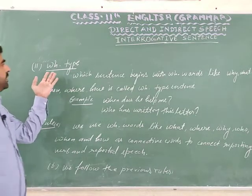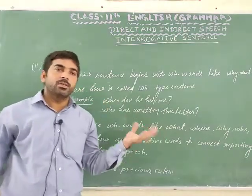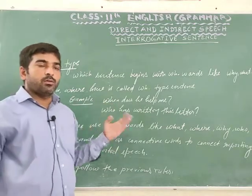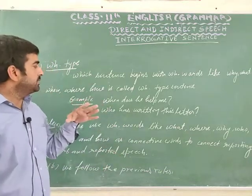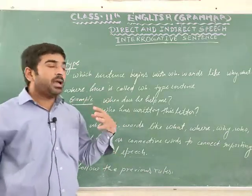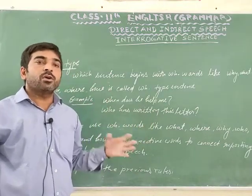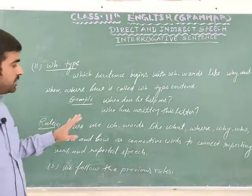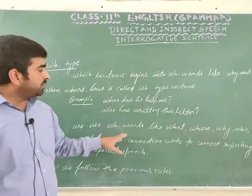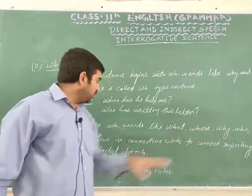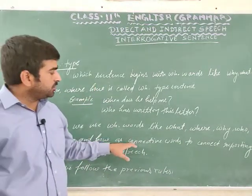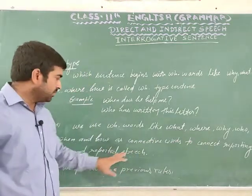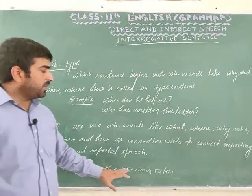Now the second type: WH type. Sentences that begin with a WH word like what, where, how, why, etc. are called WH type sentences. Rule: we use the WH word itself as the connecting word to connect the reporting verb and reported speech. We also follow all previous rules.